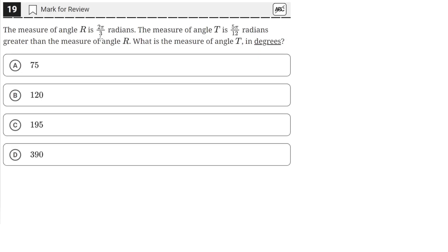The measure of angle R is 2π/3 radians. The measure of angle T is 5π/12 radians greater than the measure of angle R. What is the measure of angle T in degrees?